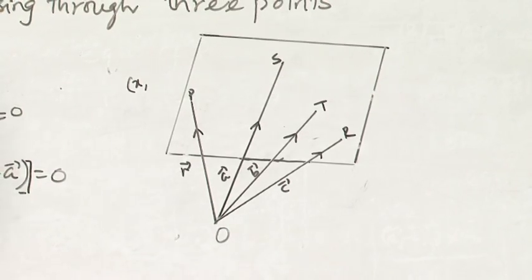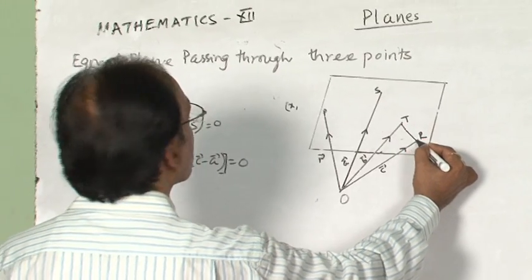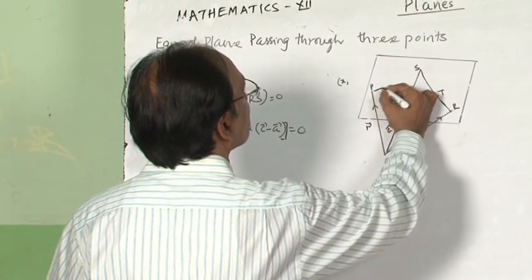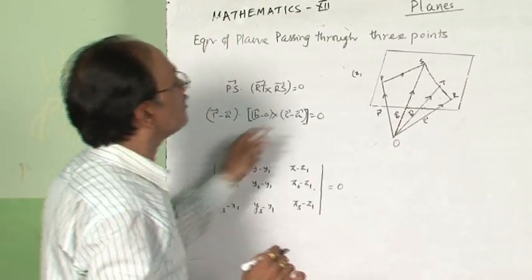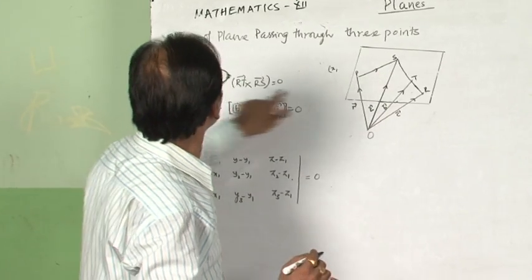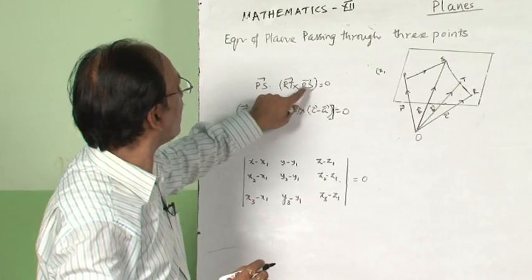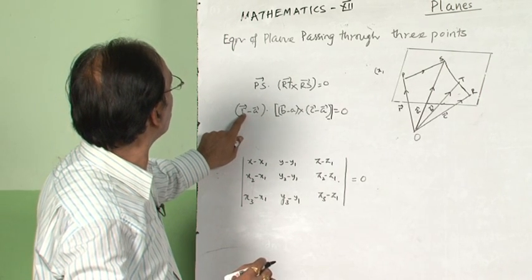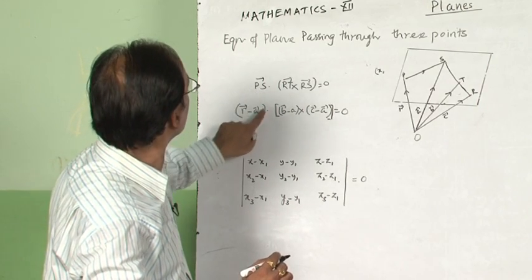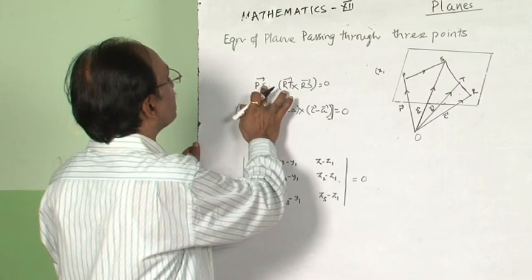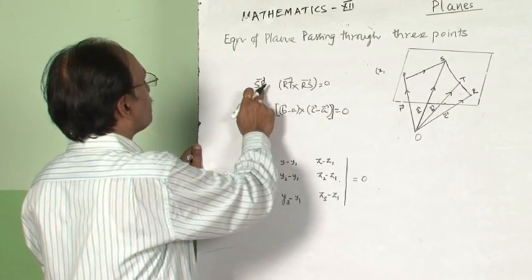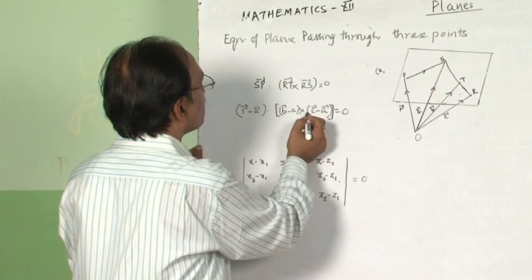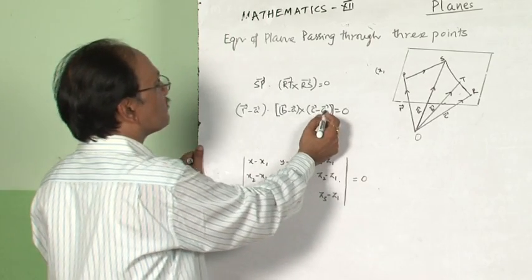In this case, SP equals (r − A). The scalar triple product of SP, (B − A), and (C − A) equals 0. That is: (r − A) dot [(B − A) cross (C − A)] = 0. This gives the equation of the plane passing through three points.